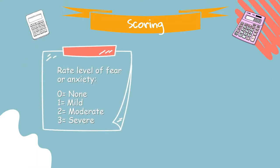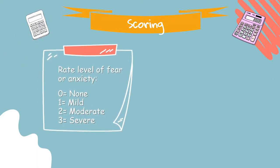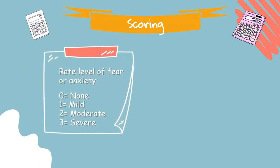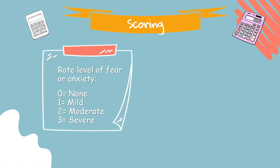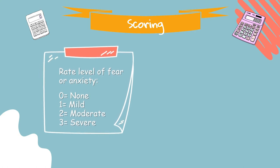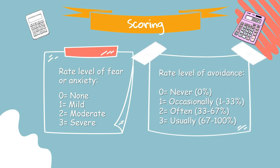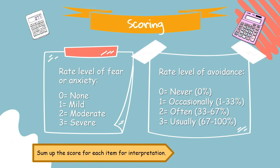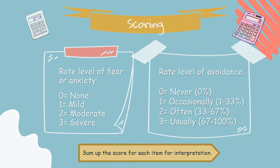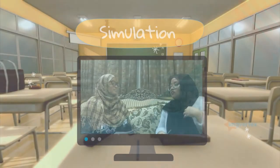Both scoring for anxiety and avoidance range from 0 to 3. For anxiety: 0 indicates none, 1 indicates mild, 2 indicates moderate, and 3 indicates severe. As for avoidance: 0 indicates never, 1 indicates occasionally, 2 indicates often, and 3 indicates usually. Sum up the score for each item for interpretation.